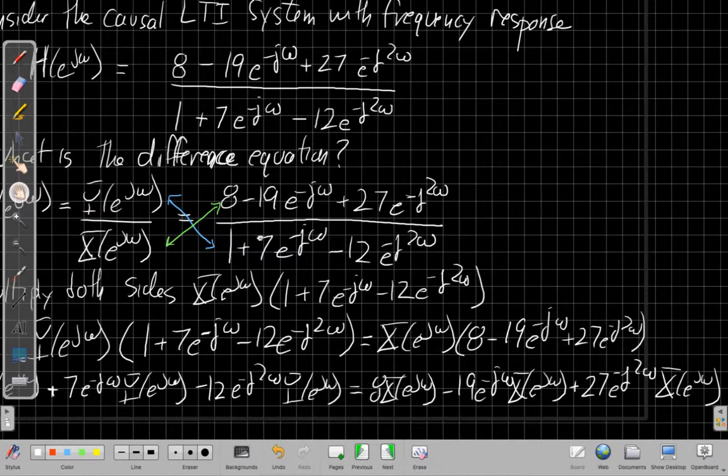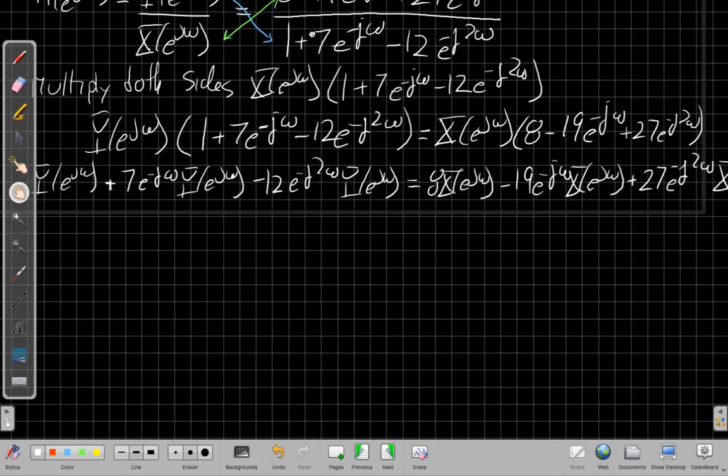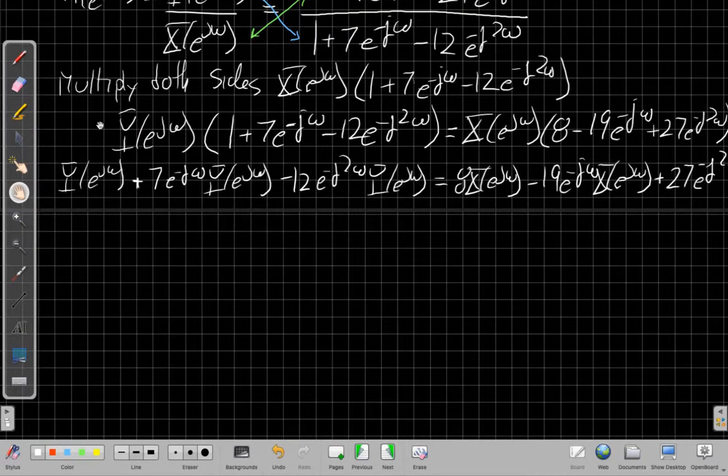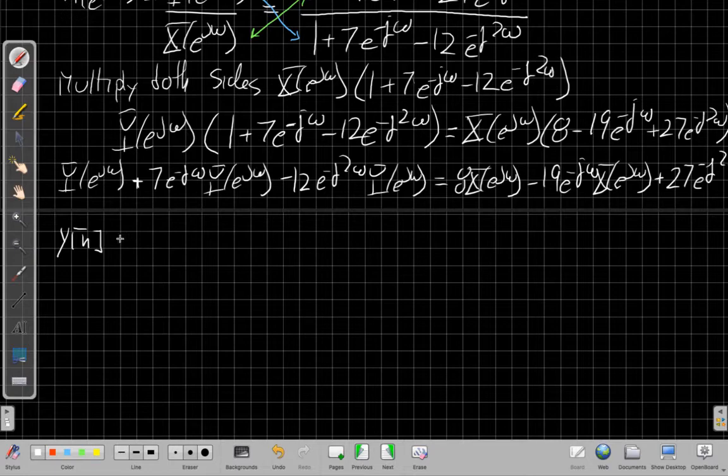So it's a wide equation, but each of the terms are pretty easy to handle. And the next step now is to take the inverse Fourier transform of each side. So if I scoot that up some, let's work on the left-hand side first. Inverse Fourier transform of Y, well, don't overthink it. The inverse Fourier transform of Y of e to the j omega is just Y of N.